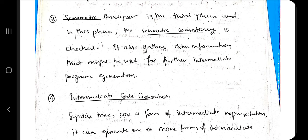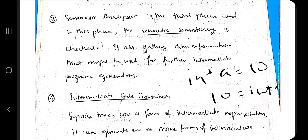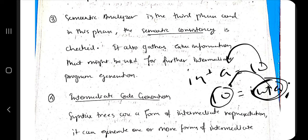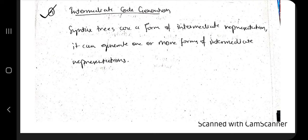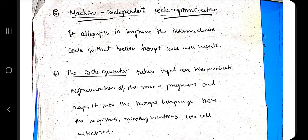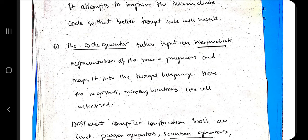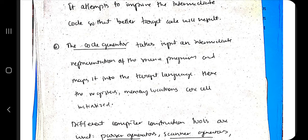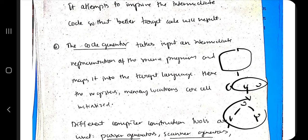The third phase is the semantic analyzer, which checks if the logic is meaningful. For example, writing '10 = int a' is syntactically correct but makes no sense — 10 should be assigned to a, not the other way around. After that, intermediate code is generated, then machine-independent code optimization is performed, and finally code generation converts the intermediate representation into the target language.